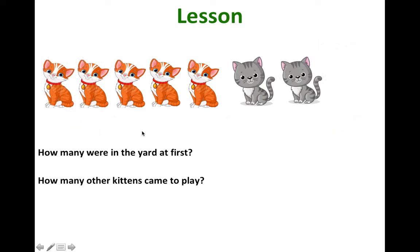So we have one, two, three, four, five orange kitten who are playing in the yard and two gray kittens joined the orange kitten. How many kittens are there all together? I want you to write a number sentence. So let me read you the story again. Five orange kitten were playing in the yard. Two gray kittens joined them. How many kittens are there all together?